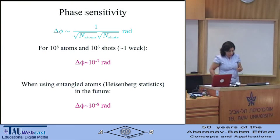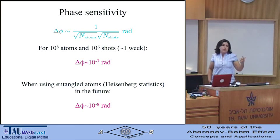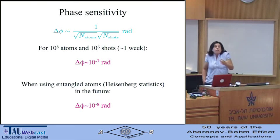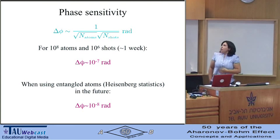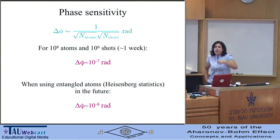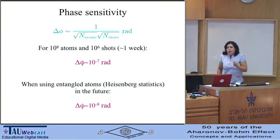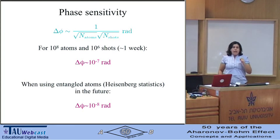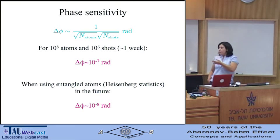The sensitivity of this experiment depends on the number of atoms you use and how many times you repeat the experiment. The sensitivity improves as the inverse square root of the number of repetitions. If I take 10^8 atoms per shot and repeat 10^6 times, the smallest phase shift I can measure is 10^-7 radians. If I were to use entangled atoms — what's called Heisenberg statistics — I would improve this sensitivity by at least one order of magnitude.